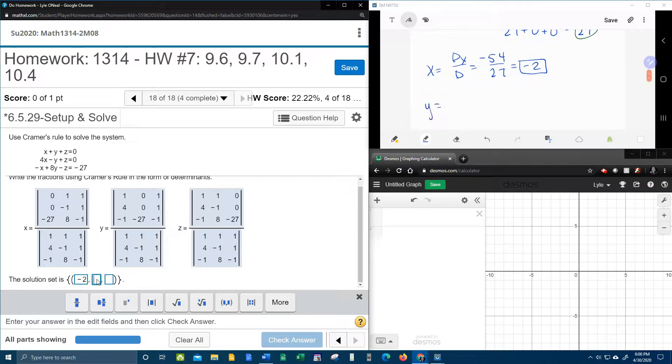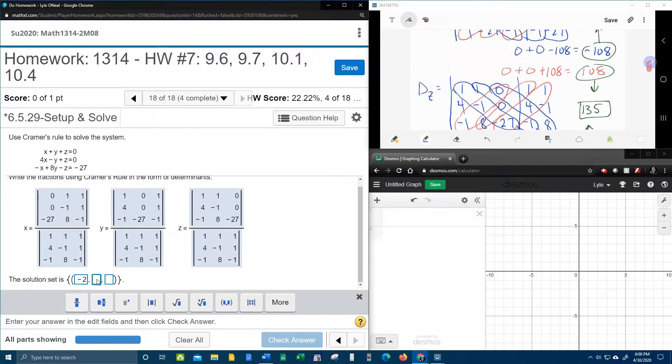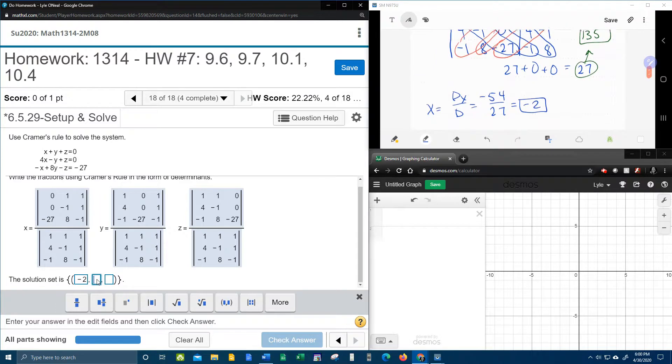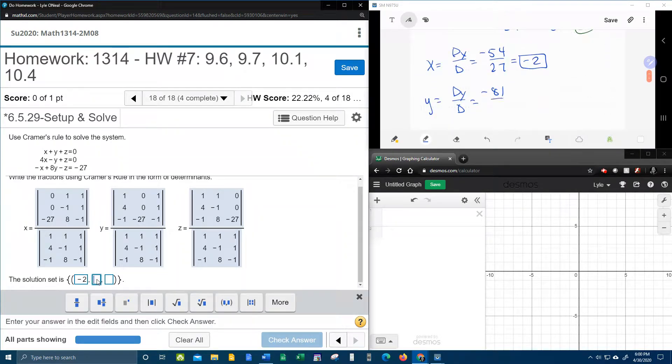Now, let's calculate y, which is D sub y over D. D sub y was negative 81. D, we know is 27. And, I believe that's negative 3 if we divide that out. Putting that into MyLabMath.